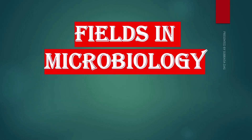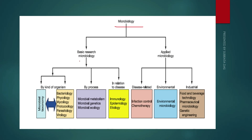Moving on to the next topic: fields in microbiology. Microbiology is classified into two basic parts — basic research microbiology and applied microbiology. In basic research microbiology, the first point is microbial taxonomy, where classification and naming of microorganisms is done. Different microorganisms are studied in different sections: bacteriology (bacteria), phycology (algae), mycology (fungi), protozoology (protozoa), parasitology (parasites), and virology (viruses).